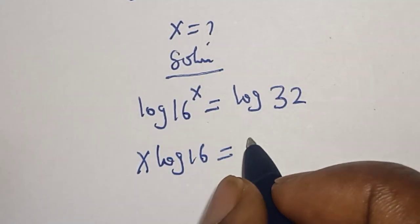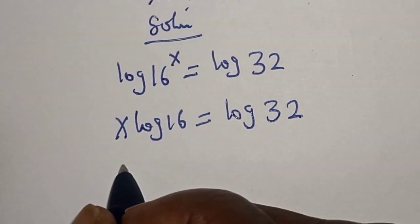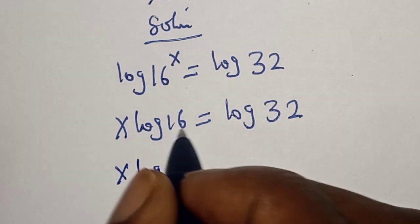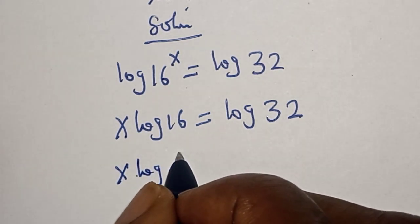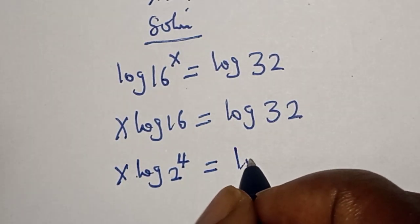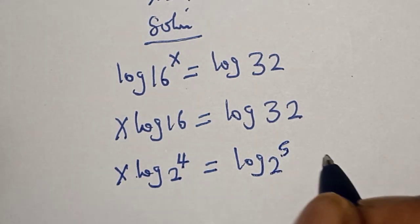x log 16 equals log 32. Then x log 2 raised to power 4 equals log 2 raised to power 5.